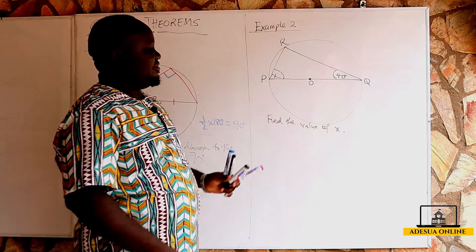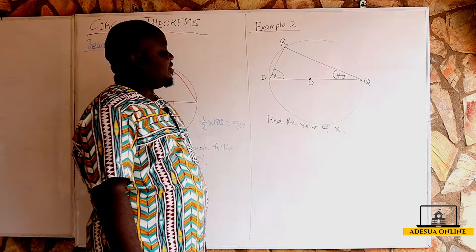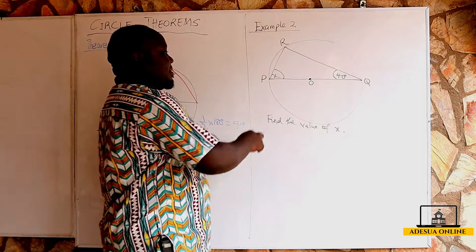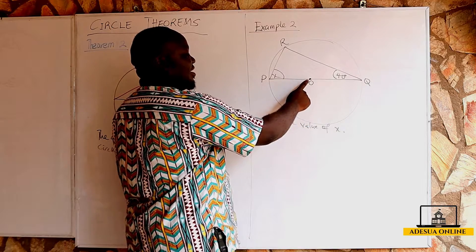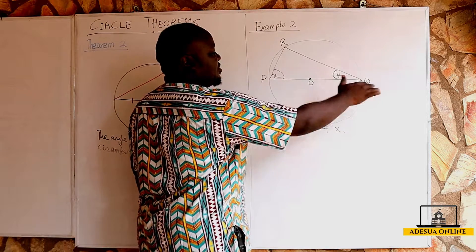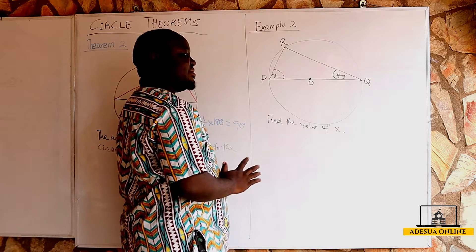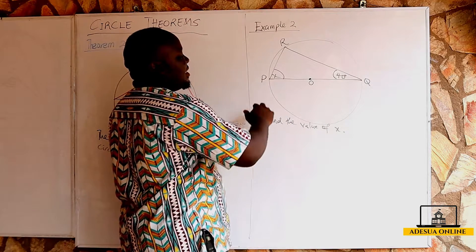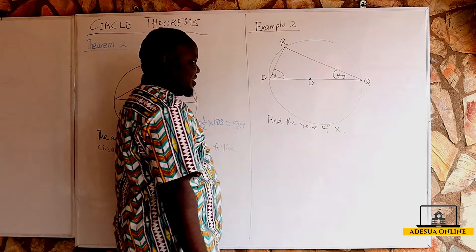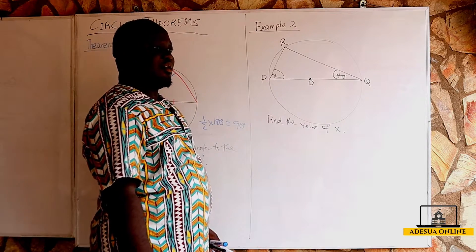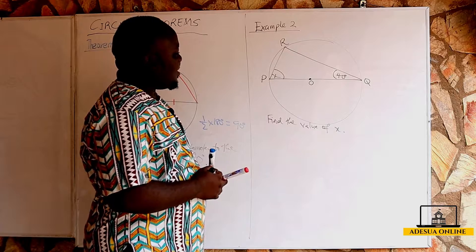Now let's take an example. We have a circle PQR with center O. We can see that POQ is a diameter because O is the center and PQ is a straight line. The chord PQ subtends an angle to the circumference, and we are asked to find the value of x.